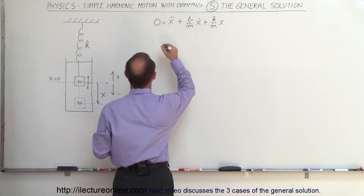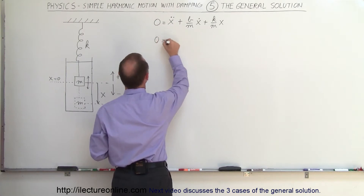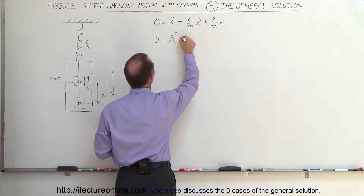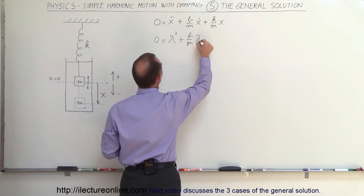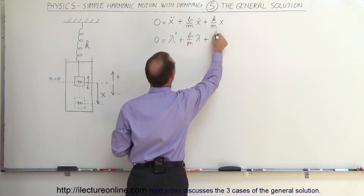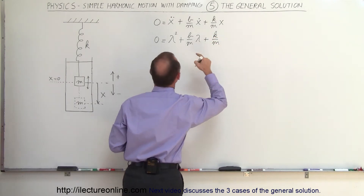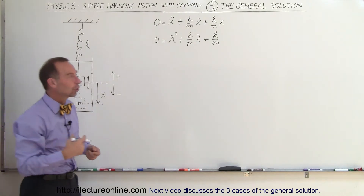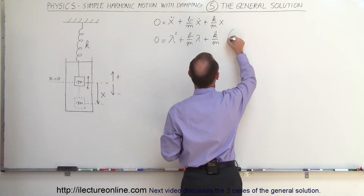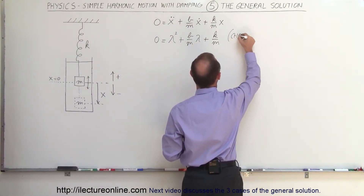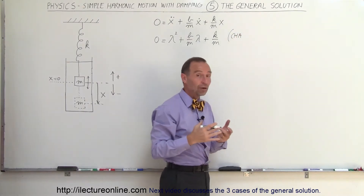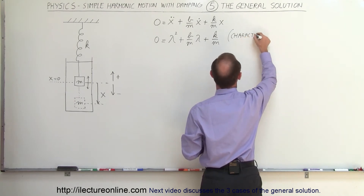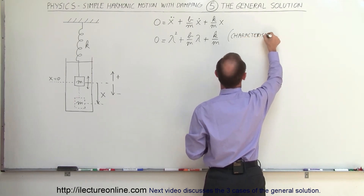So what we do is we create what we call a characteristic equation that makes that one look like a quadratic equation. In order to do that, we can say that 0 is equal to — using the variable lambda — lambda squared plus b over m times lambda plus k over m. So what we've done is we've turned the differential equation into a characteristic quadratic equation. This is one of the methods in which we can solve differential equations.